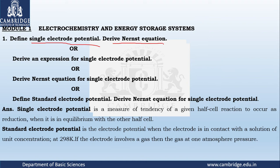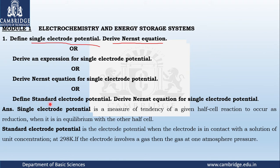What is the definition of single electrode potential? Single electrode potential is a measure of the tendency of a given half cell reaction to occur as a reduction when it is in equilibrium with the other half cell. If you write this one sentence, it will give you two marks. Note that if the question asks you to define standard electrode potential, you need to write that definition instead.